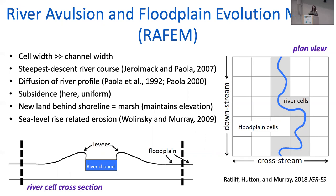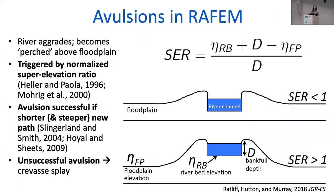The river course is determined using a pretty simple steepest descent algorithm, where this algorithm iterates along the elevation grid until it reaches sea level. The elevation changes along the river profile are calculated using a linear diffusion equation. In all of the results I'm going to show you, subsidence is uniform across the domain. Any new land created behind the shoreline — as the shoreline progrades — will be marsh that maintains some small elevation above sea level due to organic sedimentation processes. We also impose a quasi-equilibrium generalized erosion of the shoreline as sea level transgresses onshore.